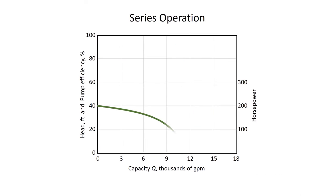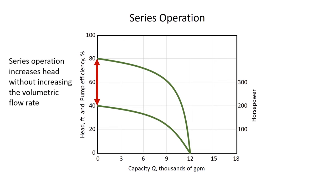Now we want to take a look at the difference between series operation and parallel operation. When pumps are in series operation, where one pump discharges into the suction of another, what we see is an increase in head but no increase in flow rate. So series operation will increase the pressure or increase the head, but it will not increase the volumetric flow rate. Here we can see the difference in head that series operation produces.